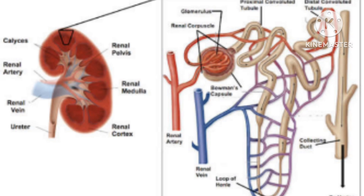Nephron is the structural and functional unit of our kidney. Our kidney removes wastes and extra fluid from our body. It also removes acid that is produced by the cells and maintains a healthy balance of water, salts, and different types of minerals in our blood.